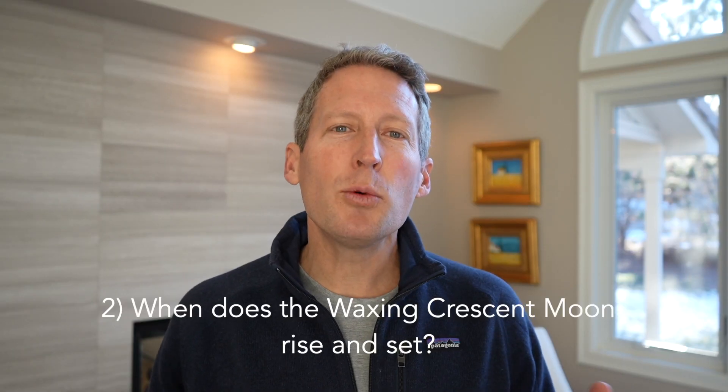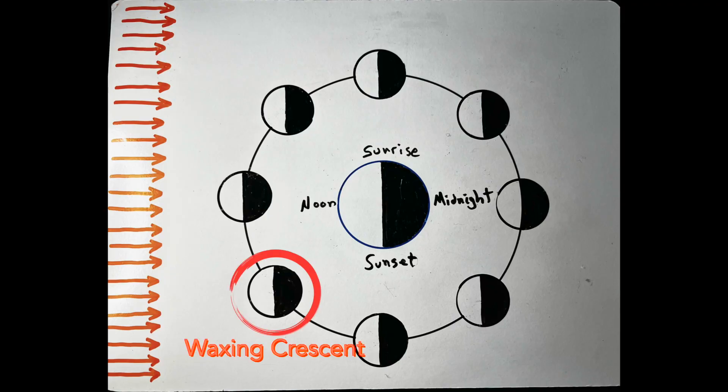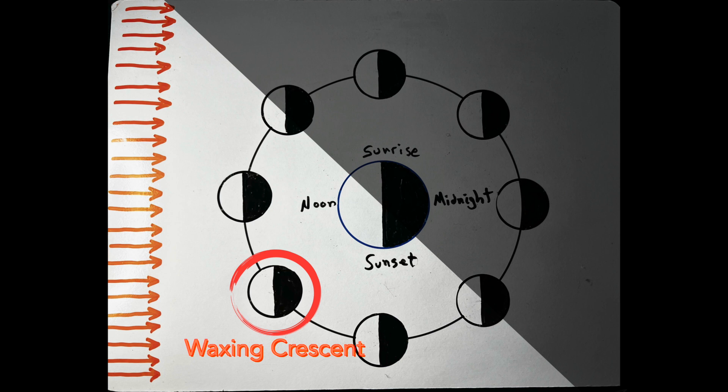Want more questions? When does the waxing crescent moon rise and set? Here's the waxing crescent moon phase position. I'm going to shade in the side of the Earth facing away from the waxing crescent moon, where nobody can see it. It's first visible when you rotate to the part of the Earth halfway between the sunrise and noon at 9 a.m. It gets highest in the sky at 3 p.m. And sets at 9 p.m.